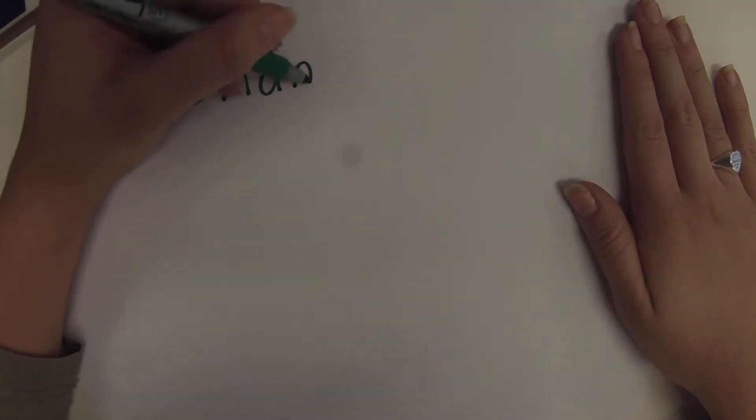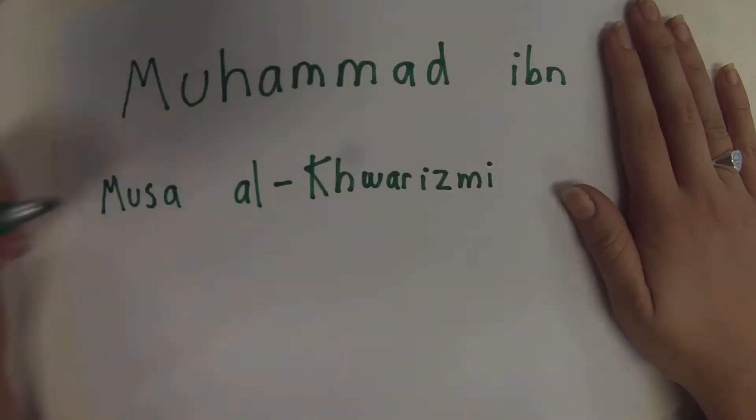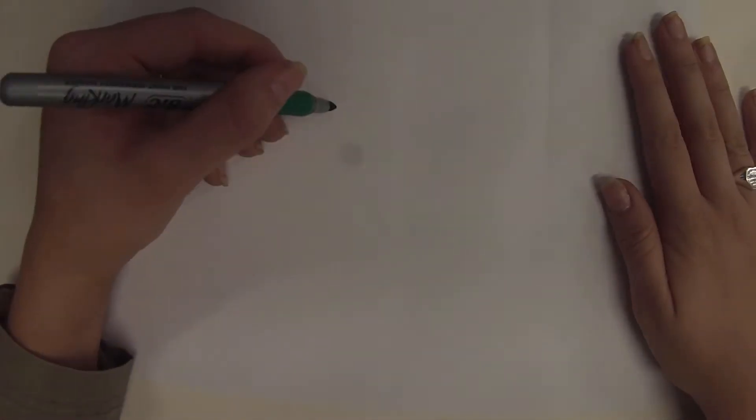Born around 780 AD in what is thought to be Khoristan, Al-Khwarizmi was a Persian Muslim mathematician who played a significant role in contributions to modern-day algebra.